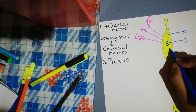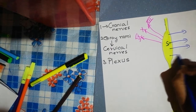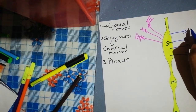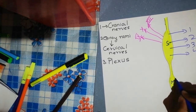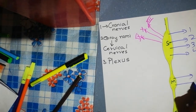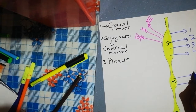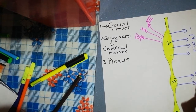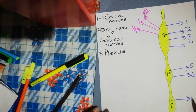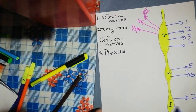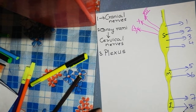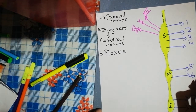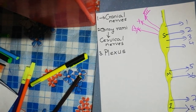The superior cervical ganglion gives gray rami to the upper four cervical ventral rami (C1–C4), the middle cervical ganglion gives branches to C5 and C6, and the inferior cervical ganglion gives branches to C7 and C8.